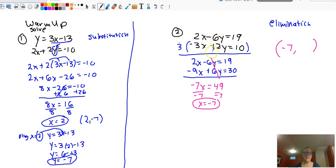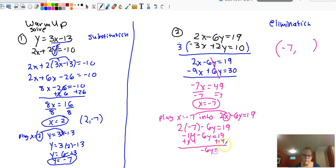To find the y value, pick one of the original equations and plug x equals negative 7 into one of them. So let's just do 2x minus 6y equals 19. Again, you could have picked the other one. That's fine. And you replace this x value with that negative 7. So 2 times negative 7 minus 6y. We're going to add 14 to both sides. Negative 6y is equal to 33.